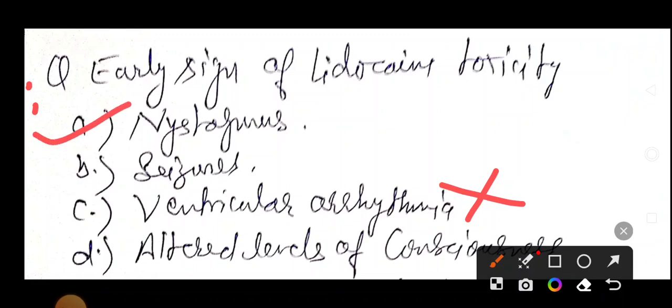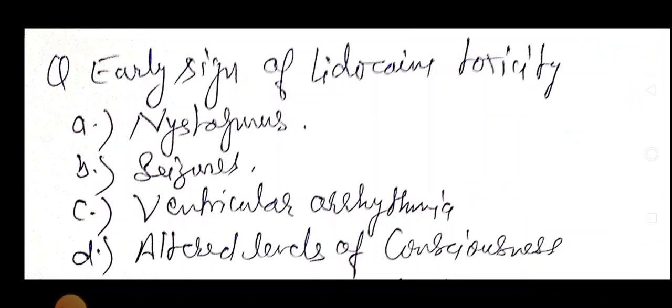In late sign, after late toxicity occurs, seizures and coma. So if they ask MCQ, what about the late sign of lidocaine toxicity? Yes, definitely with lidocaine toxicity, we find neurological findings like altered level of consciousness, then seizures, then coma. But early is nystagmus. So answer is nystagmus. If late, then answer is seizures.